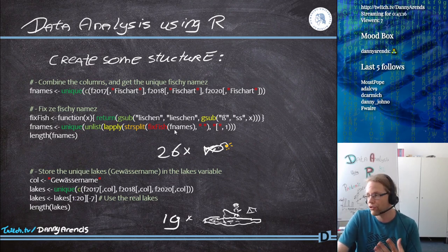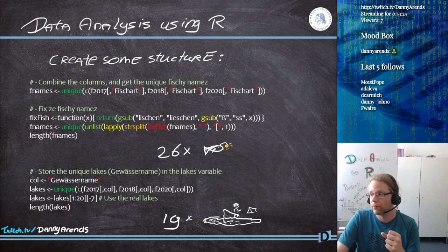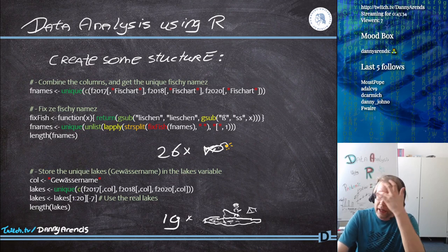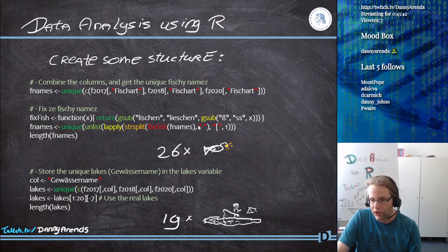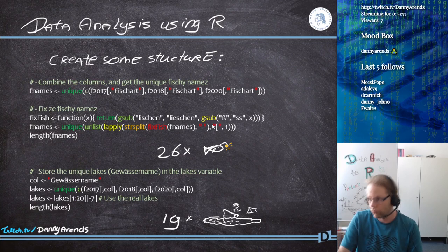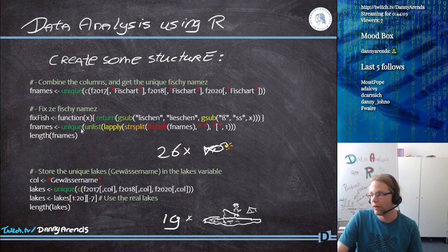What I did was use strsplit split by space, then use lapply with the selection operator to take the first element from each list item, then unlist and take only unique values. Looking at the length of the fish names, there were now 26 different fish names. Let's switch to R so you can see that as well.